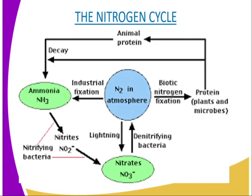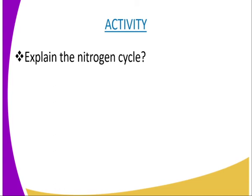That is actually the whole process of nitrogen utilization. We have been able to see how the nitrogen is converted from nitrogen from the air up to the nitrates, and then absorbed through the roots to the plants. The animals will obtain that nitrogen either by feeding on the plants or feeding on other organisms. You will be required to undertake the following activity, whereby you are required to explain the whole process of the nitrogen cycle.